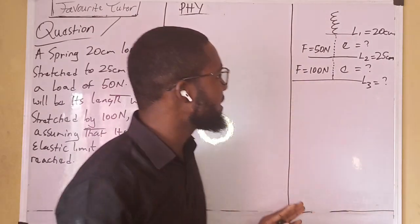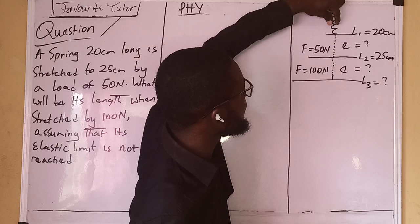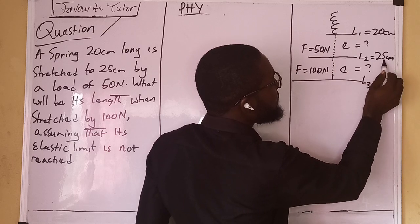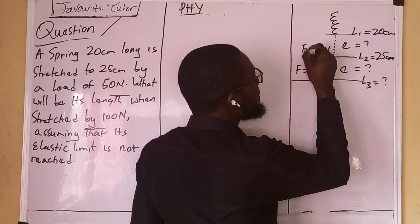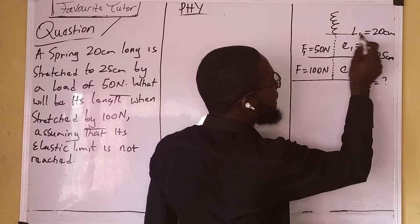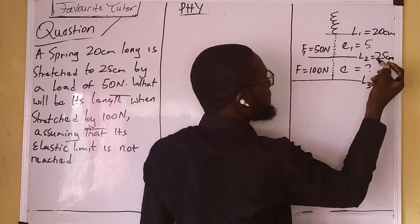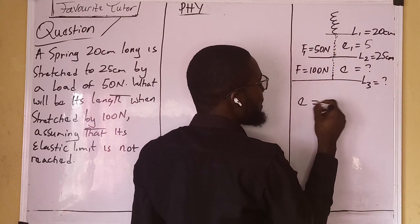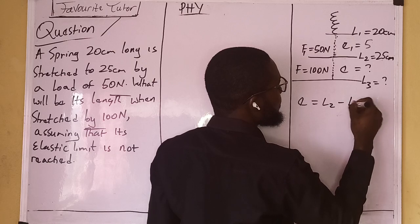We place a load of 50 newtons and we get a length of 25 centimeters. What is the extension here? We call this extension one. If length two is 25 and length one is 20, then the extension is five, because 20 plus 5 gives us 25. So extension one equals length two minus length one, which gives us 5 centimeters.